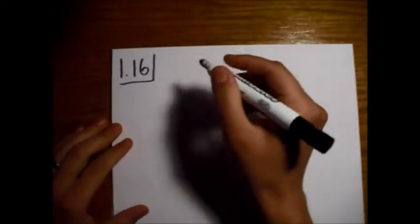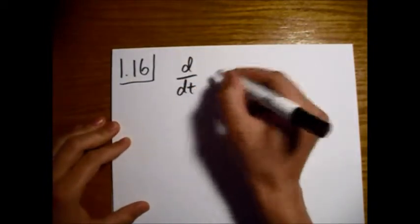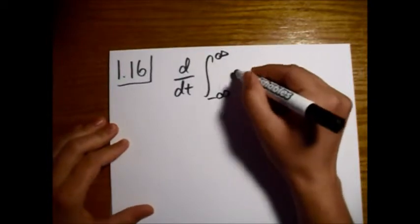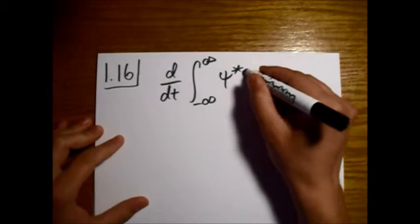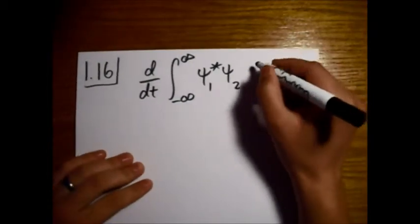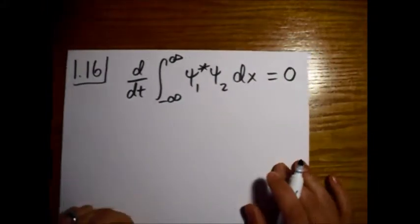Alright, this is Griffith's quantum mechanics problem 1.16, and what we're going to do is show the following: the time derivative of the inner product of any of these two normalizable states is equal to 0.